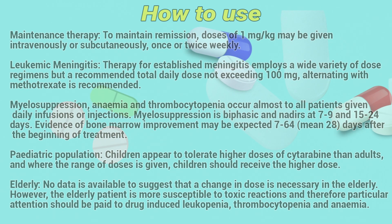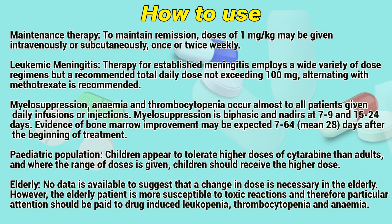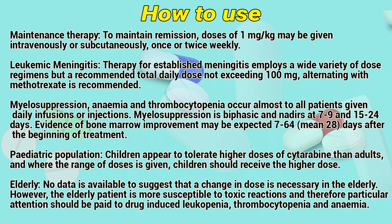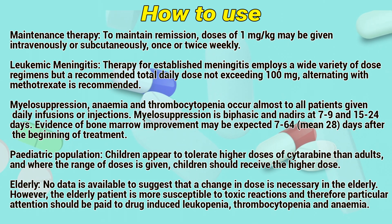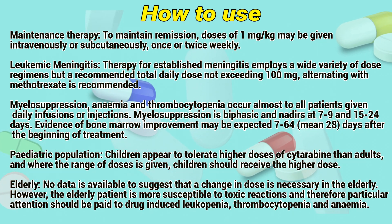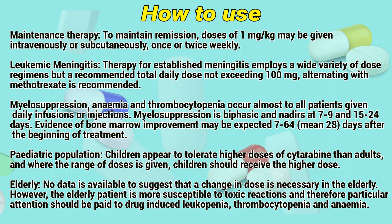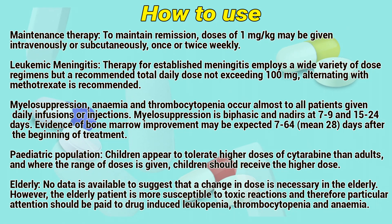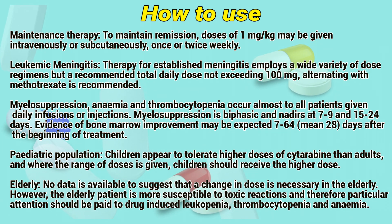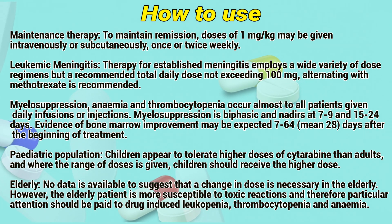Maintenance therapy: To maintain remission, doses of 1 mg per kg may be given intravenously or subcutaneously once or twice weekly. Leukemic meningitis: Therapy for established meningitis implies a wide variety of dose regimens, but a recommended total daily dose not exceeding 100 mg, alternating with methotrexate, is recommended. Myelosuppression and anemia from thrombocytopenia occur in almost all patients given daily infusions or injections. Myelosuppression is biphasic, occurring at 7 to 9 and 15 to 24 days. Evidence of bone marrow improvement may be expected 7 to 64 days after the beginning of treatment.